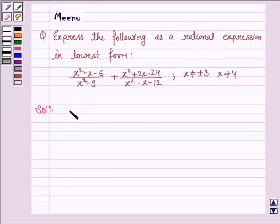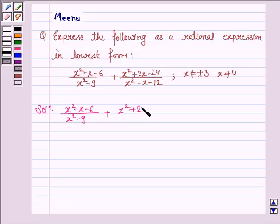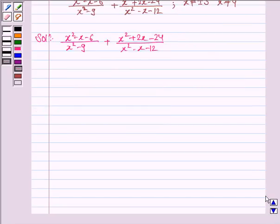The given expression is x² - x - 6 upon x² - 9 plus x² + 2x - 24 upon x² - x - 12. To reduce this into lowest form, we need to factorize and simplify this.